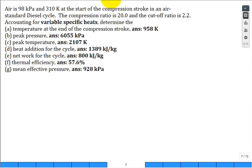So we have air at a given pressure and temperature at the start of the compression stroke, so that's P1 and T1. It's air standard diesel cycle. Its compression ratio is 20 or 20 to 1, and the cutoff ratio is 2.2. Now, accounting for variable specific heats using table A22, solve this problem.